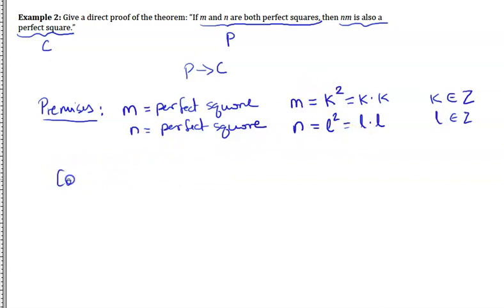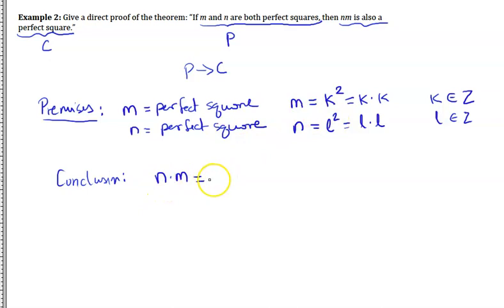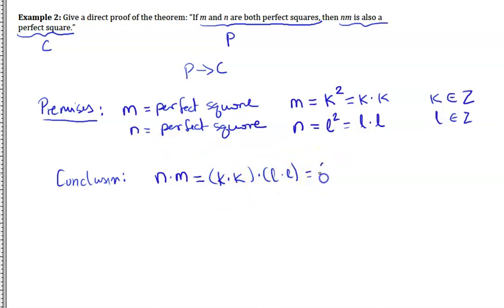Now we try to figure out the conclusion. In the conclusion, I want the product N times M to be a perfect square. Because N is K times K and M is L times L, multiplying them gives K times K times L times L. Because multiplication is associative, I can rearrange to get (KL) times (KL).